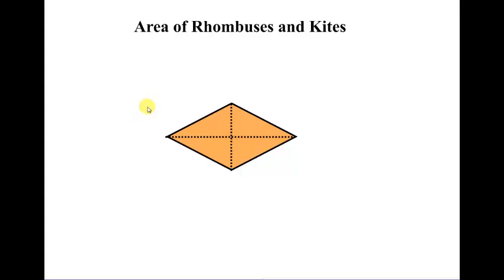Hey, in this lesson we take a look at the area of rhombuses and kites. Now this is a kind of unique formula because we aren't going to focus our attention on base and height like we have been with our other polygons.